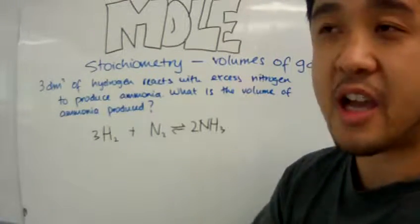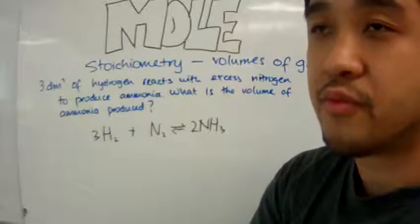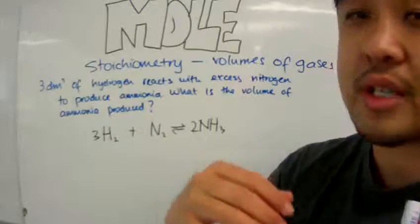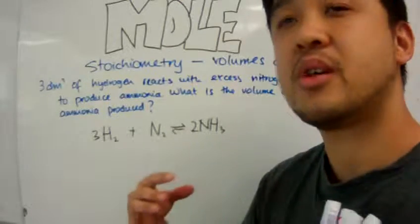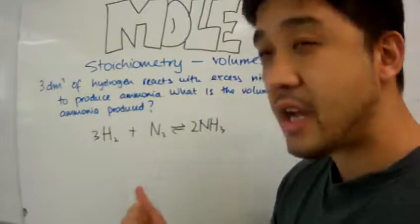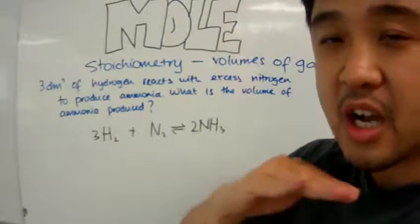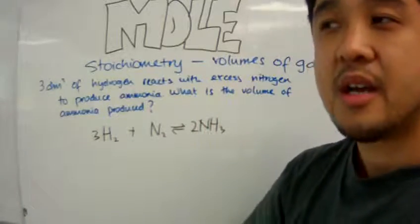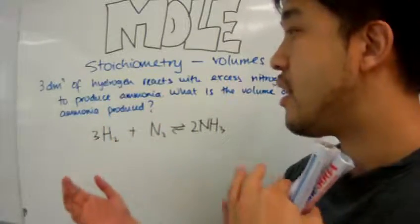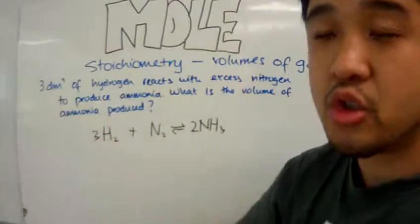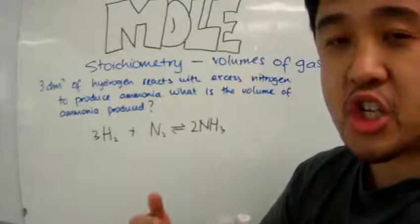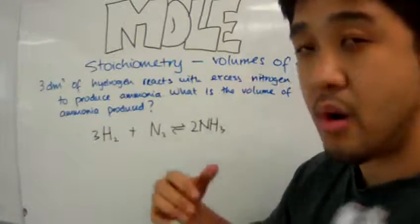Now, because this is a reaction of reacting volumes of gases, and we treat that all gases will occupy the same amount of volume at a given room temperature and pressure. And because this reaction is conducted at a constant pressure and temperature, in essence, we don't really need to convert the volume to moles, and then using the mole-to-mole ratio to find out how many moles of ammonia we've made.